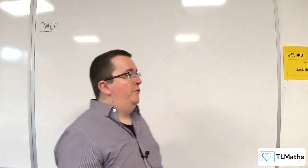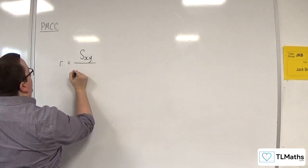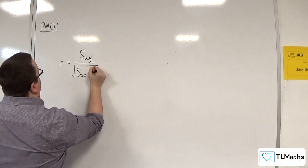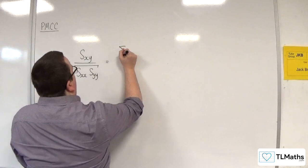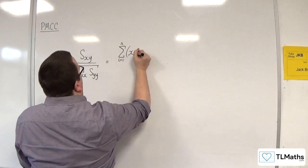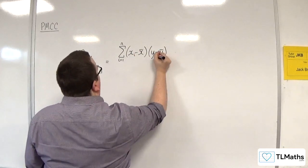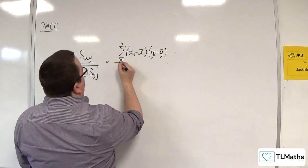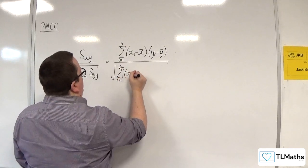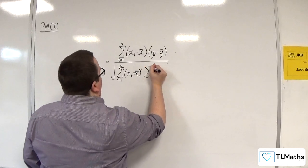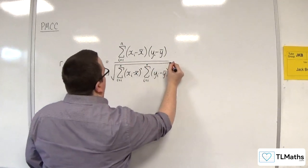So the product moment correlation coefficient R is equal to SXY over the square root of SXX SYY. Now we derived the formula for that, which was the sum from I equals 1 to N of X take away X bar times Y take away Y bar. I should put I's there as well. But divided by the square root of the sum from I equals 1 to N of XI take away X bar squared times by the sum from I equals 1 to N of YI take away Y bar squared. Then we've got the square root going over the whole thing.